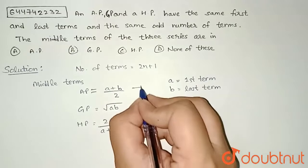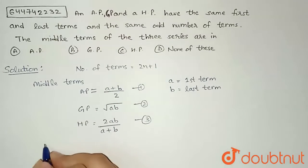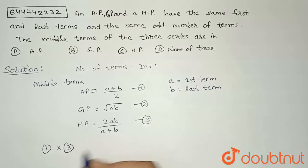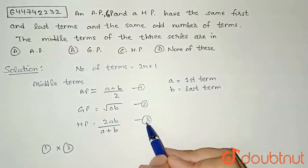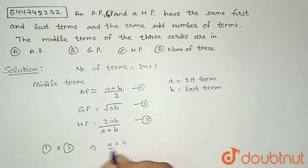us consider this as equation 1, 2, and 3. Now if we multiply equation 1 into 3, you can see that if we multiply these two, a+b will get cancelled. So this implies